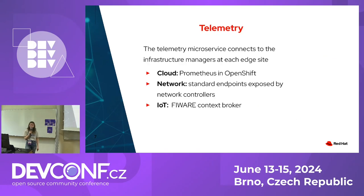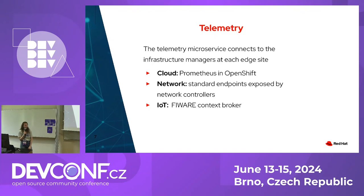The telemetry layer uses many different microservices to gather all the different metrics it needs. We have cloud, network, and IoT metrics. The cloud metrics are scraped using Prometheus, which is the built-in operator in OpenShift itself. The network metrics are gathered using the standard endpoints that the network controllers expose. And then we have the Fiber Context Broker, which is one of our partners, and they get the metrics from the different IoT devices.